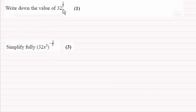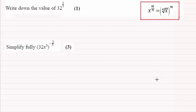First, we need to write down the value of 32 to the power 1/5. As a reminder, this relies on the rule that x^(m/n) equals the nth root of x all to the power m.